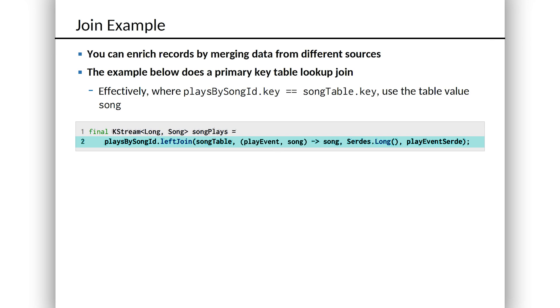Because this is a left join, we want to keep the play events even if somehow we don't find a song to look up. If somehow there's a problem with that reference data and we can't find the song ID, that's fine. We want to maintain the play event in the resulting stream.